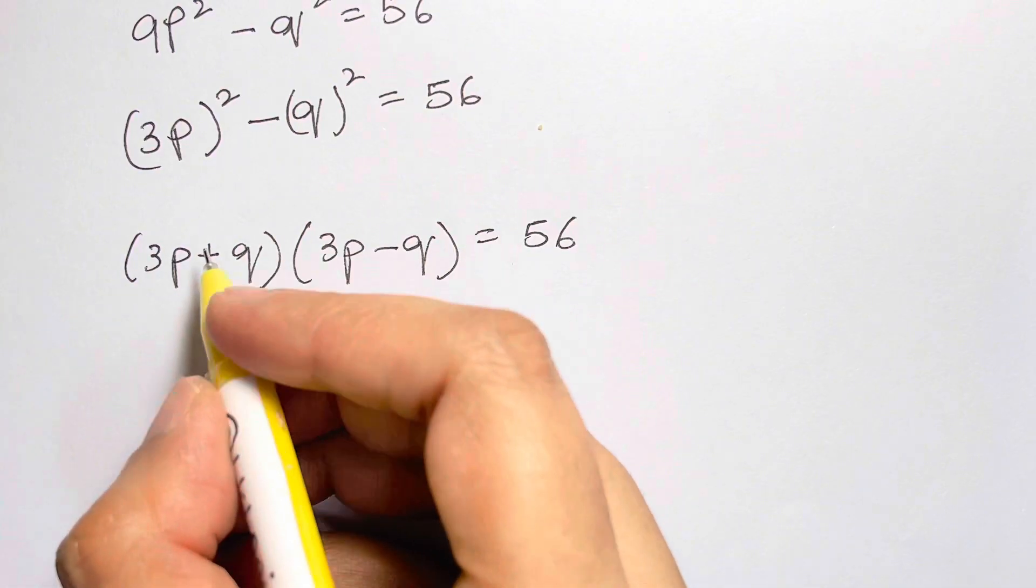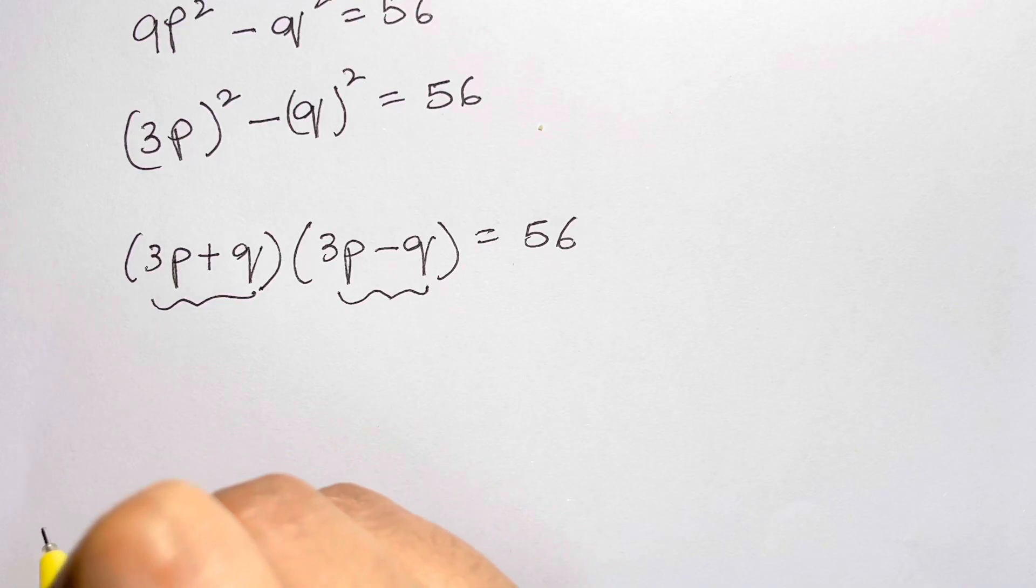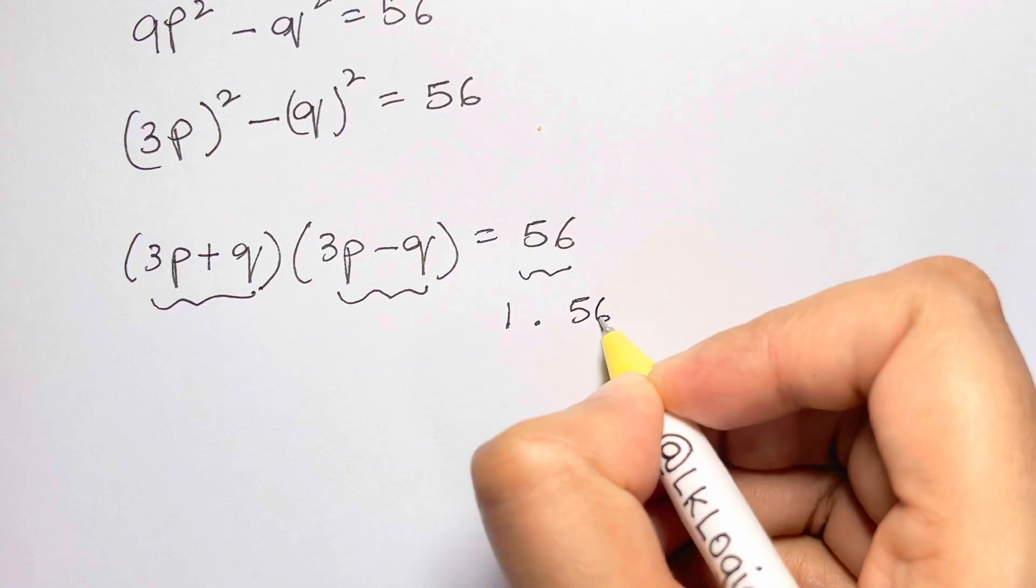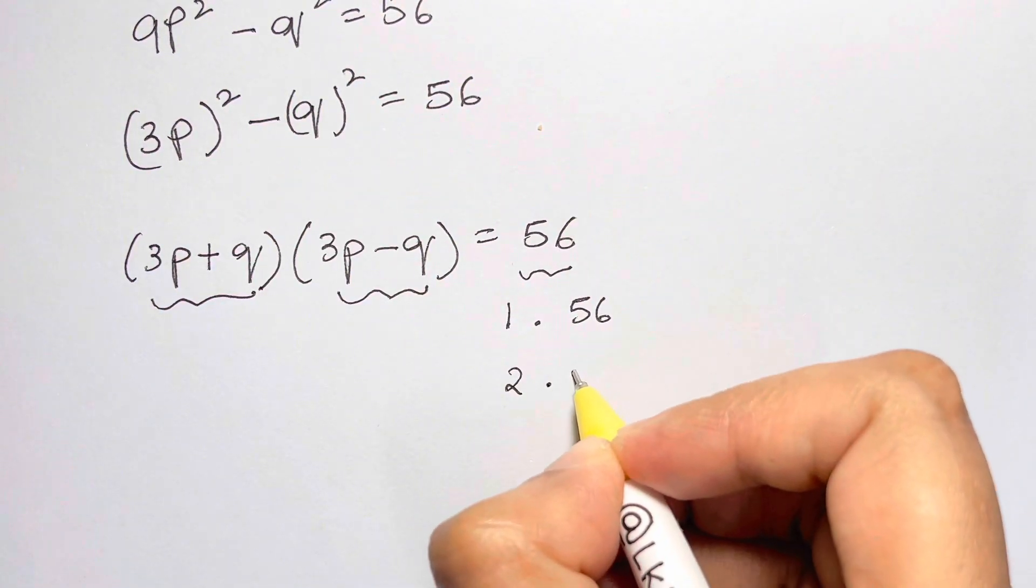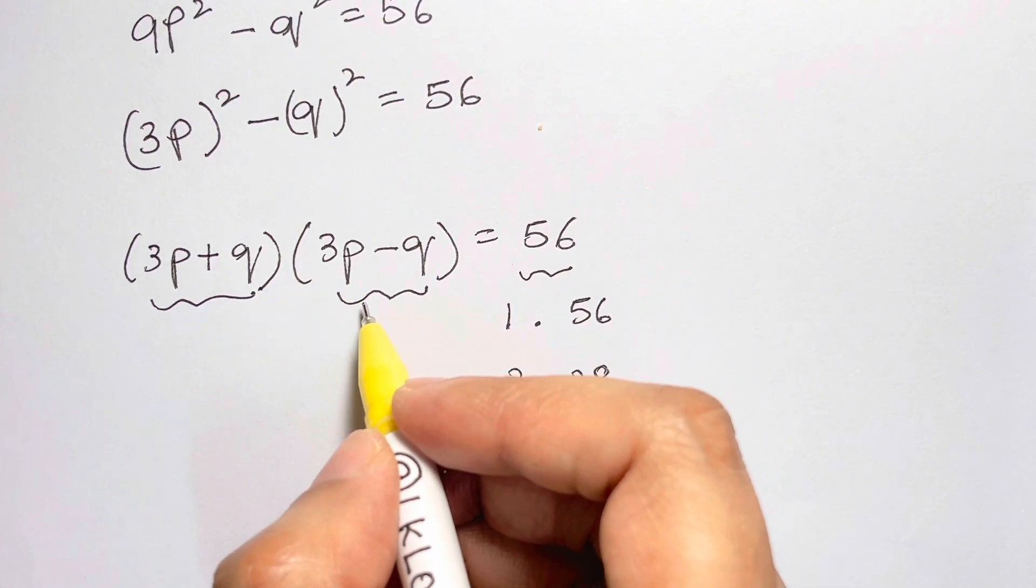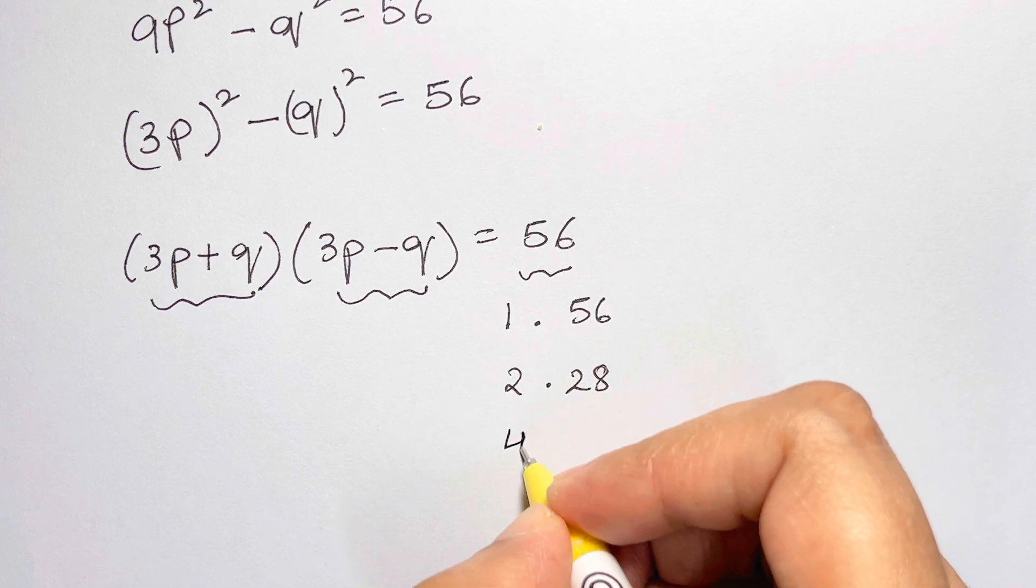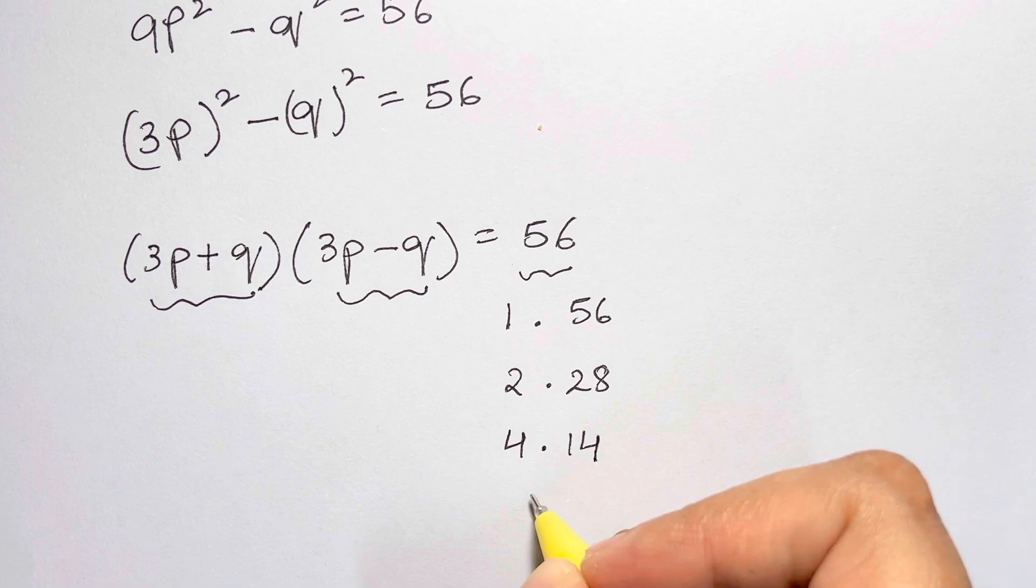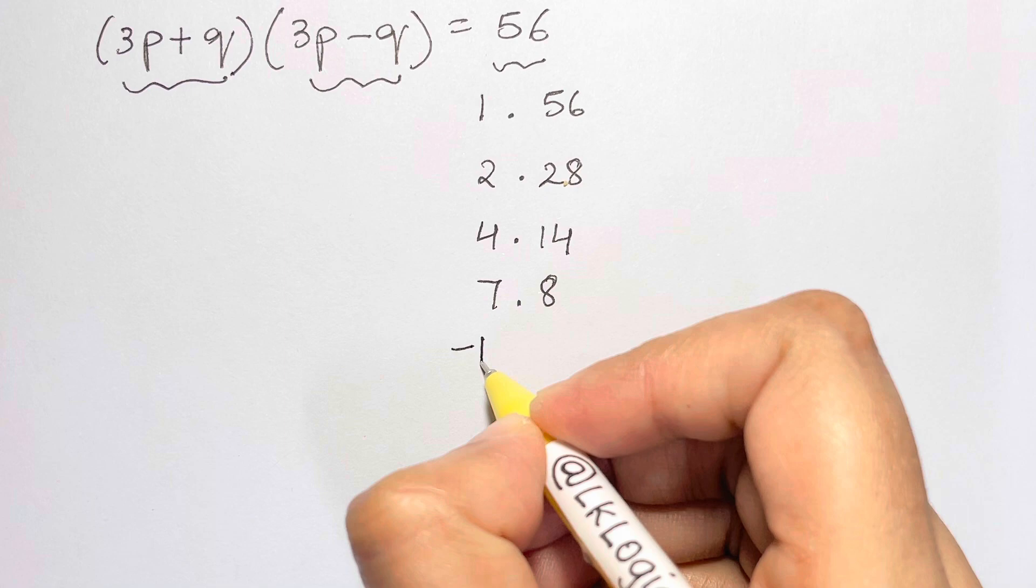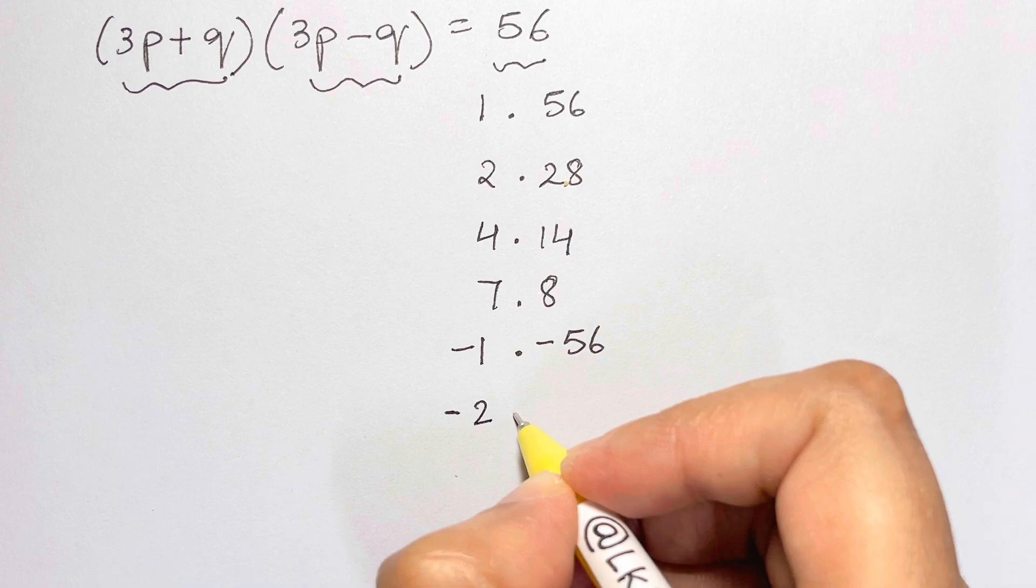Now as p and q are integers, 3p + q is also an integer and 3p - q is also an integer. Let's find the factors of 56. We have 1×56, 2×28, 4×14, 7×8, and negative ones as well: -1×-56, -2×-28, -4×-14, and -7×-8.